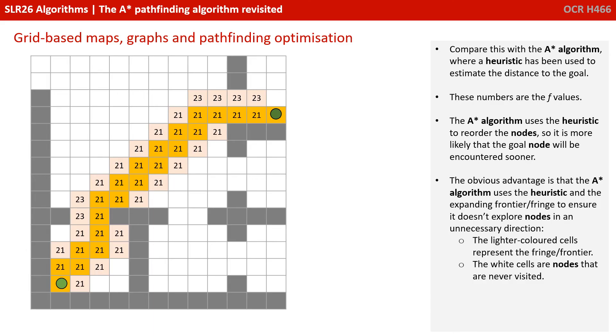Compare this with the A-star algorithm, where a heuristic has been used to estimate the distance of the goal. These numbers are the f-values. The A-star algorithm uses the heuristic to reorder the nodes, so it's more likely the goal node will be encountered sooner.